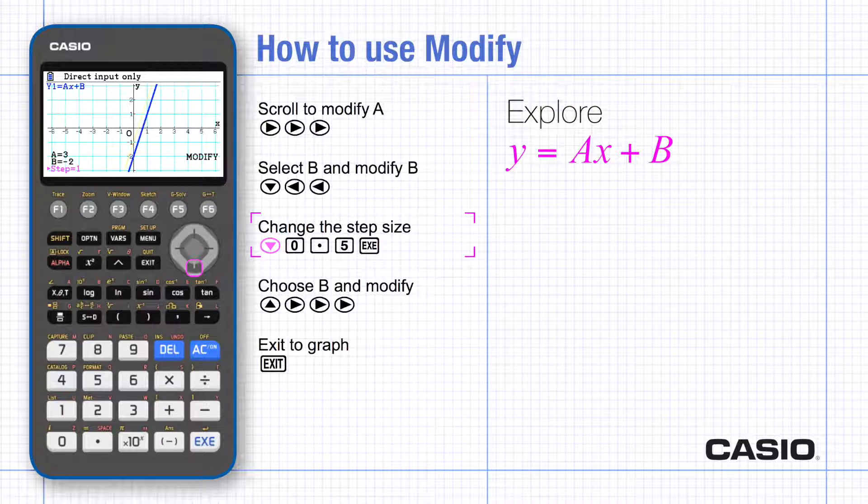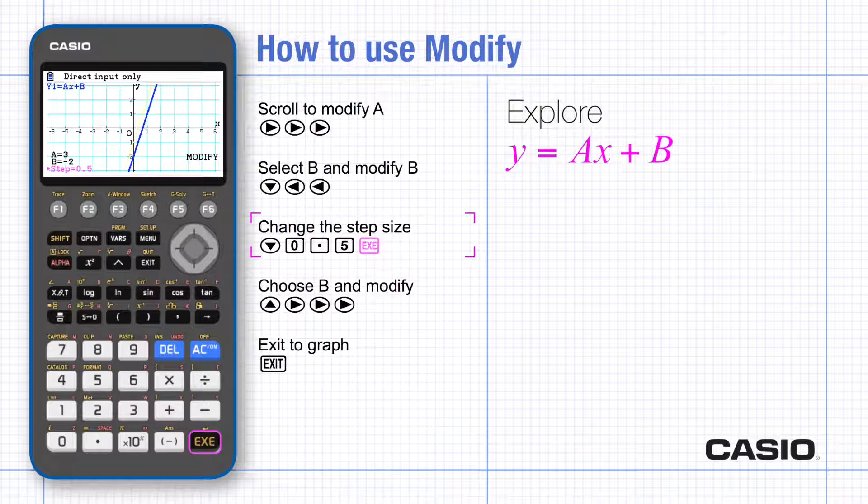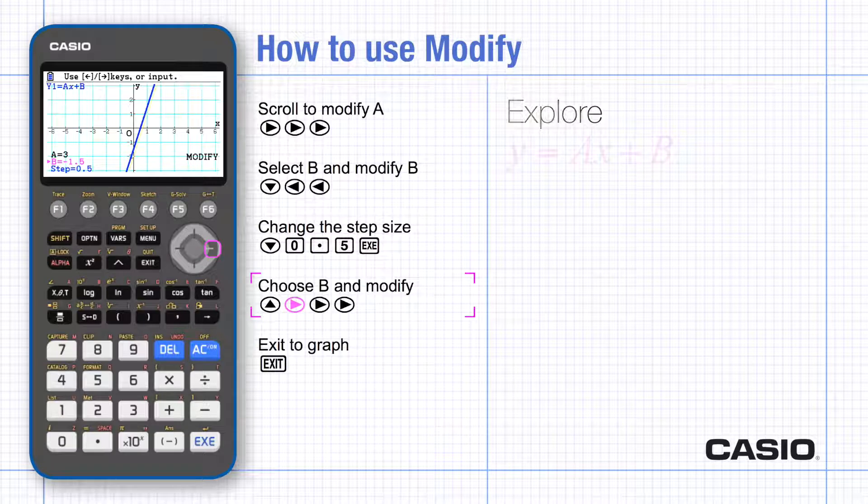If you scroll down to step, you can change the step size, and you can simply type the value you want, as indeed you can for a and b as well. And now when b is modified, it changes by 0.5 each time.